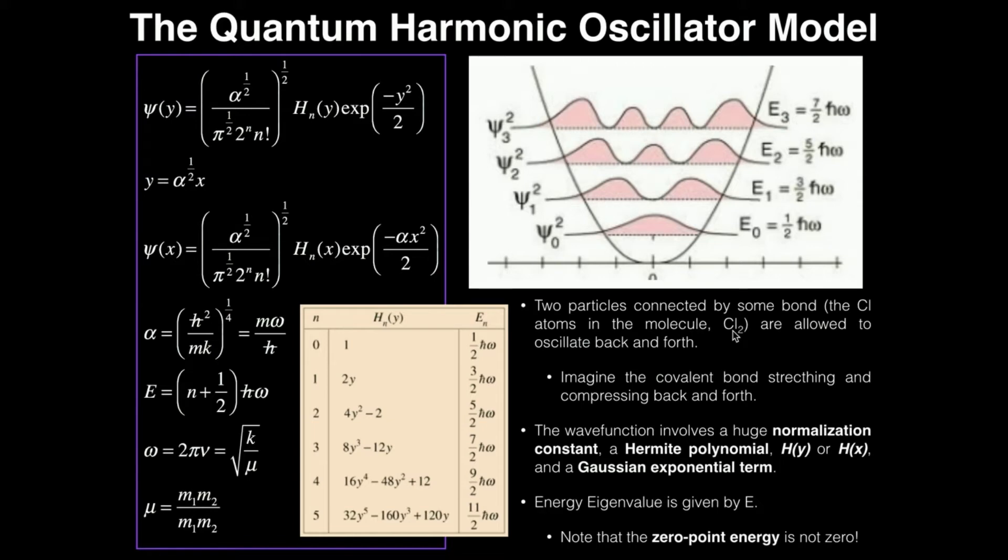So we have two atoms in a diatomic molecule, and they're obviously joined by a covalent bond. And in the harmonic oscillator, we're allowing the bond to stretch back and forth. So the two atoms are oscillating back and forth towards and away from each other. So basically, you're imagining the covalent bond connecting them, compressing and then stretching, compressing, stretching back and forth.